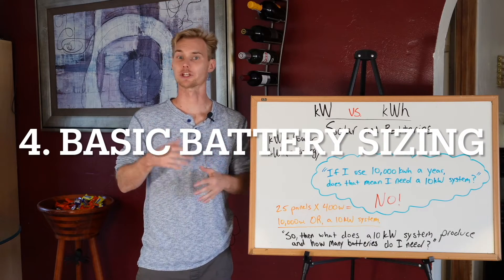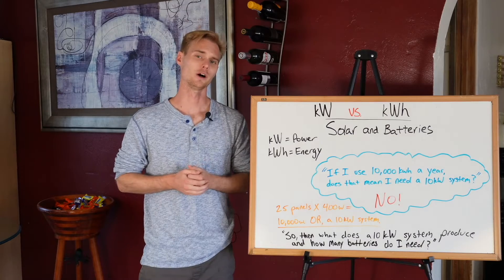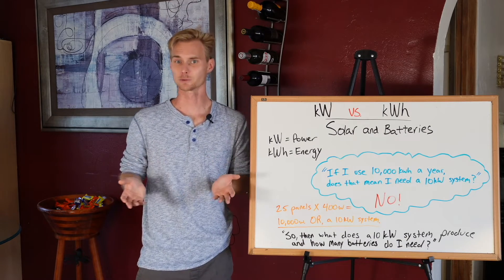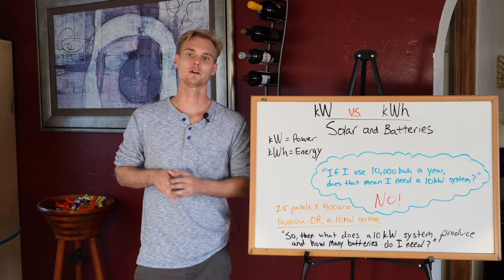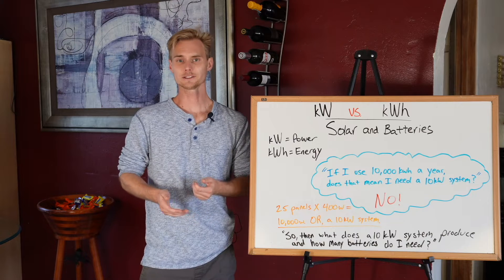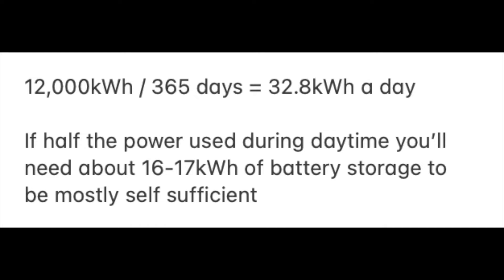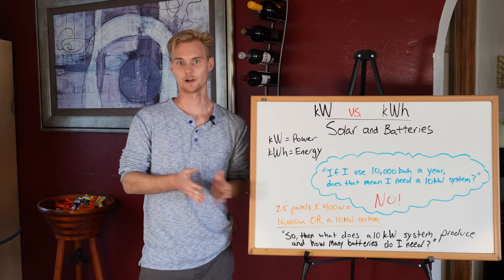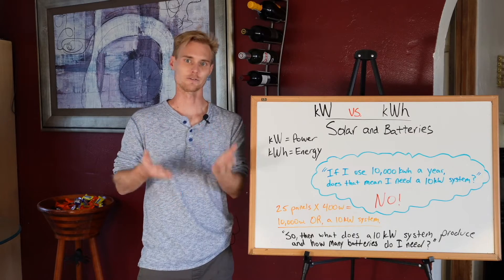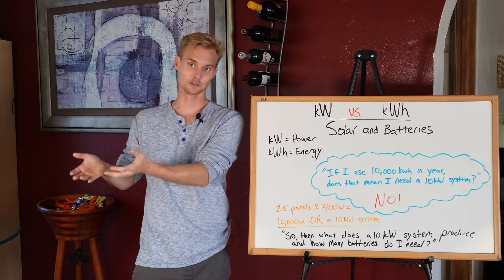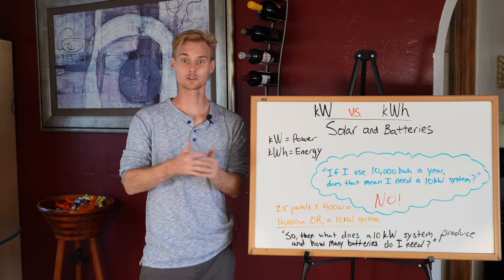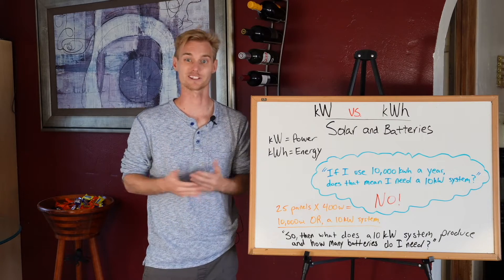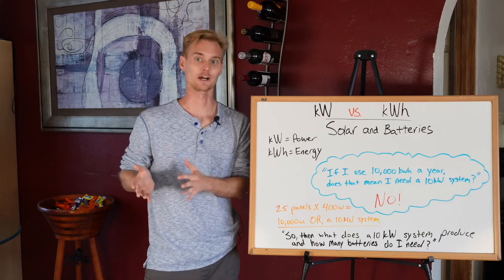Let me give a practical example. Let's say you consume 12,000 kilowatt hours a year, which is pretty average. Divide that by 365 days and you get about 32.8 kilowatt hours per day on average. If you use approximately half your power during sun hours and half during the evening, that's about 16 to 17 kilowatt hours during the day and 16 to 17 kilowatt hours at night.